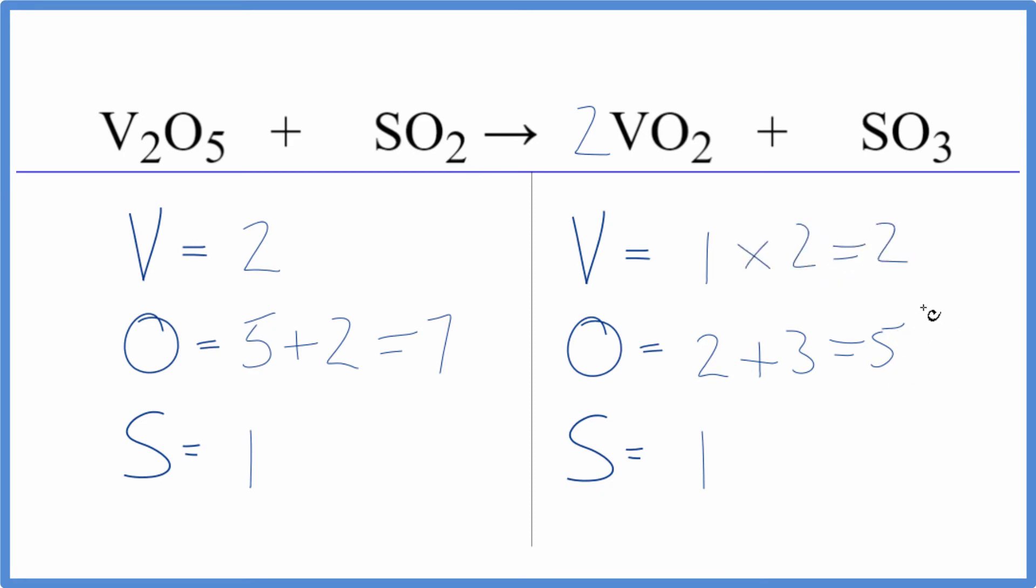Let's update the oxygens and see what happened. 2 times 2, that's 4, plus 3, that's 7, and this equation is balanced. I thought it was going to be a lot more difficult.